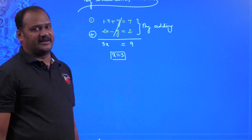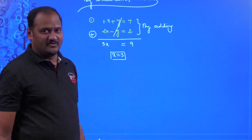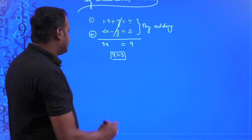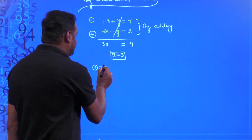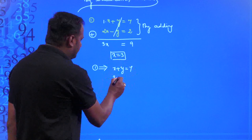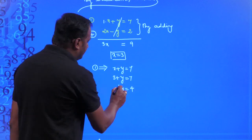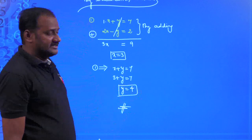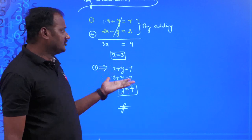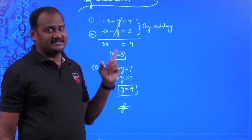After getting x = 3, substitute back into the first equation x + y = 7: 3 + y = 7, so y = 7 − 3 = 4. Therefore x = 3 and y = 4. The elimination method is much easier than the substitution method.